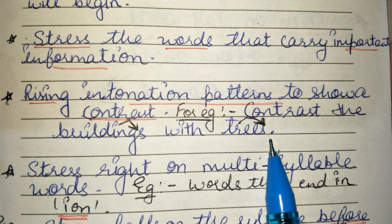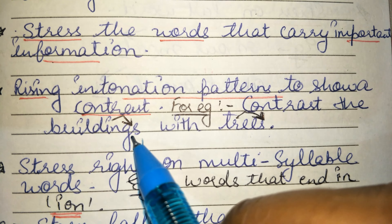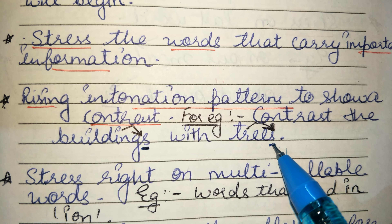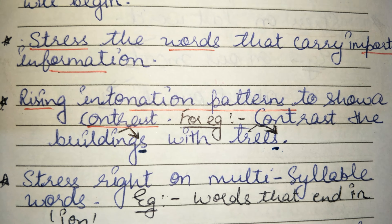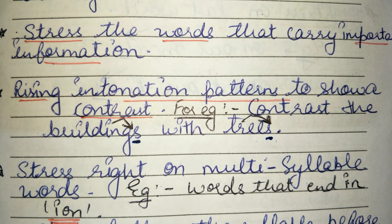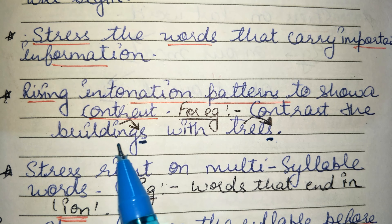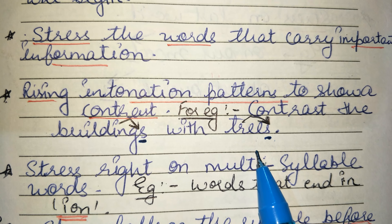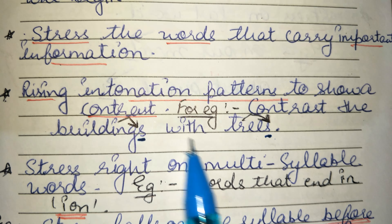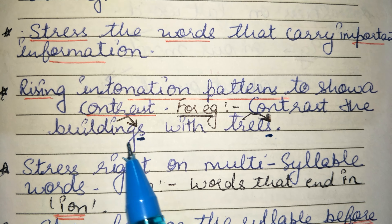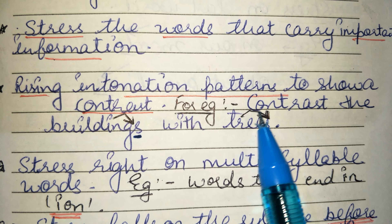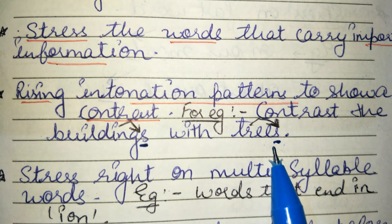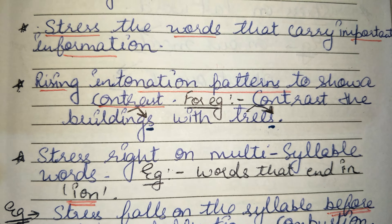The next thing is rising intonation patterns to show contrast. For example, if we have 'buildings with trees' — where both buildings and trees are mentioned — we have to rise our voice to show the contrast, like: 'buildings with trees.' We need to bring variation in our voice.